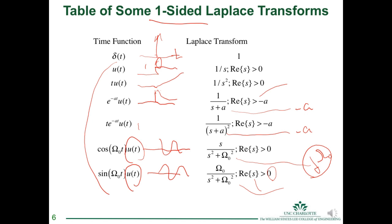The damped exponential is a well-behaved function with a pole in the left half plane — a stable pole. The unit step u(t) has a pole at s equals zero, so strictly speaking it's not stable. The system with impulse response u(t) is an integrator, which is unstable: a bounded step input produces an unbounded ramp output, so it's not BIBO stable. Its pole is on the j-Omega axis, not strictly in the left half plane.